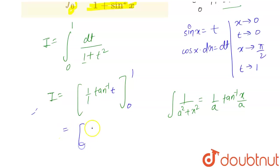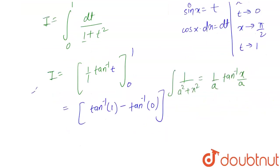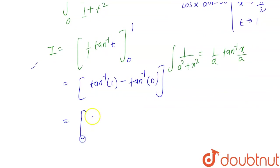So now put the limit. On putting upper limit we have tan inverse 1 minus, on putting lower limit we have tan inverse 0. So it becomes equal to, now tan inverse 1 is pi by 4 and tan inverse 0 is 0. So the value for the integral is pi by 4. This is our answer for the above integral.